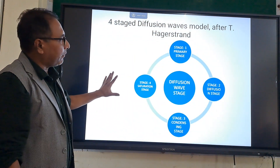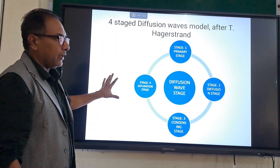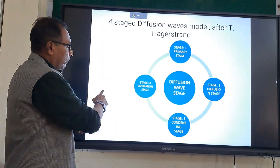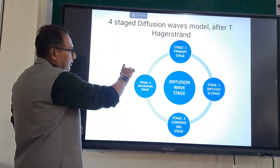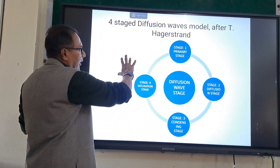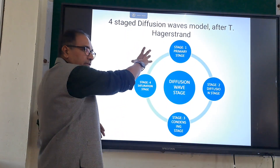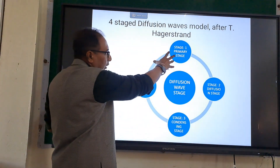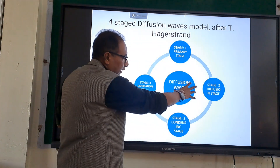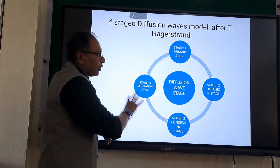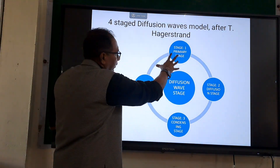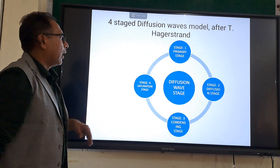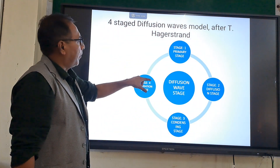You can also identify these stages in a graphical manner — how diffusion starts, then eventually reaches its crest or peak, then eventually falls. Condensing and saturation represent the decline. Accordingly, you can prepare a graph based on this model.